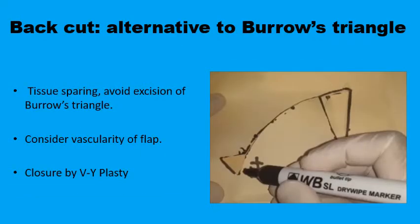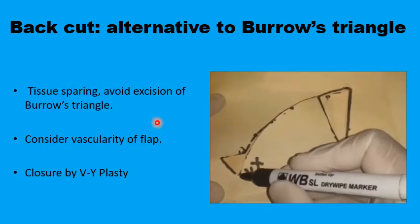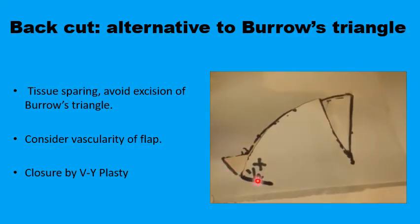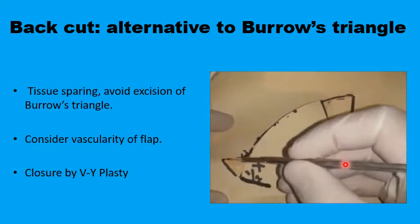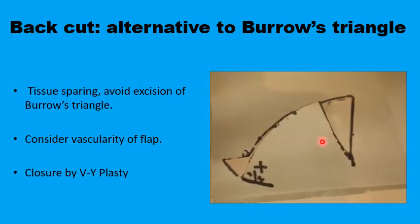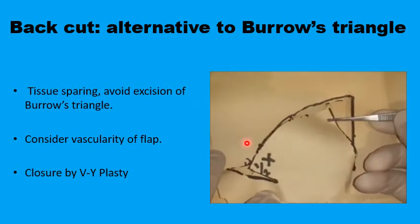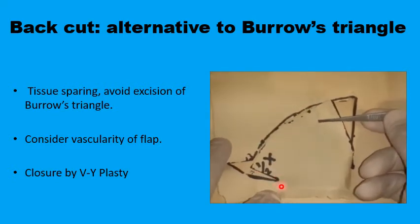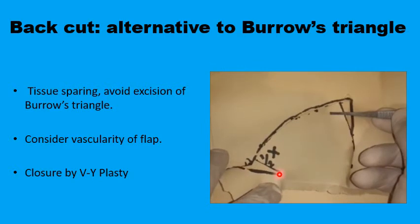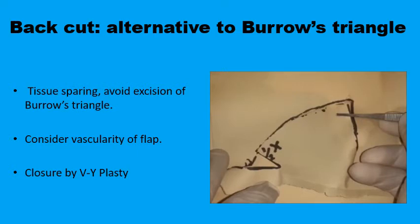One alternative to excising a Burrows triangle, if you don't want to discard viable tissue, is to make a back cut at the other end of the curvilinear line. Rather than excising the triangle, you make a back cut, ensuring you are not compromising the blood supply of the flap from the base. With the back cut in place, the flap can be mobilized more easily into the defect, and the secondary defect formed by the back cut is usually closed in a V-to-Y type of reconstruction.